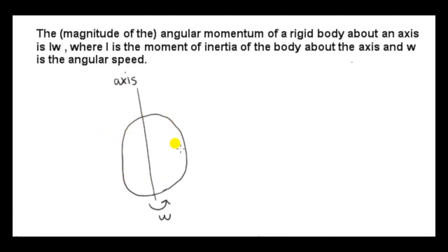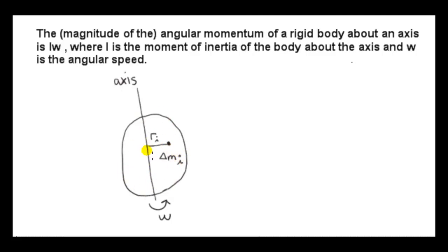Now we can deal with the case of a rigid body rotating about an axis. The magnitude of the angular momentum of a rigid body about an axis is I times omega, where I is the moment of inertia of the body about this axis and omega is its angular speed. Let's pick a particle that makes up this rigid body — say its mass is delta m_i. Whenever you see the Greek letter delta, we're talking about a particle that makes up the body, so this particle has a very tiny mass. Its distance from the axis of rotation is r sub i; we're dealing with the i-th particle.